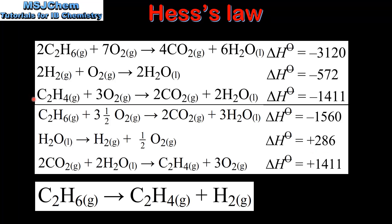In our last equation we have one mole of ethane in the reactants but in our final equation we have one mole of ethane in the products. So we need to reverse the equation, giving us two moles of carbon dioxide reacting with two moles of water to form one mole of ethane and three moles of oxygen. Because we reversed the reaction we also reversed the sign of the enthalpy change from negative to positive.